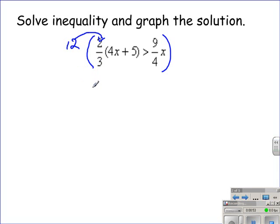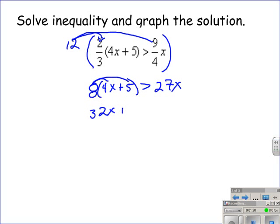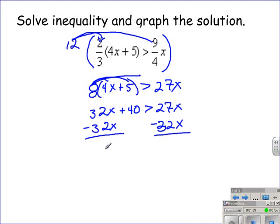Now we distribute that 12. 12 times 2 thirds gives us 8. We don't distribute to the 4x and the plus 5 because that's in a second set of parentheses. Then we distribute to the 9 fourths. So we need to do 12 times 9 fourths, which will give us 27x. Now we distribute the 8. 8 times 4x is 32x and 8 times 5 is 40. We bring down the rest of the inequality, the greater than the 27x.